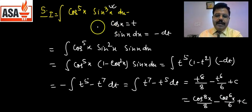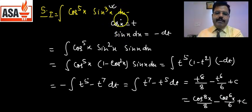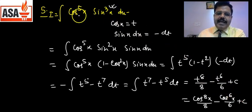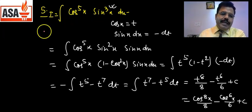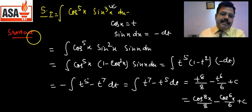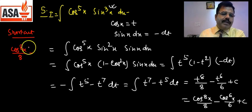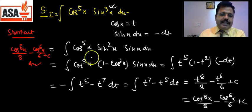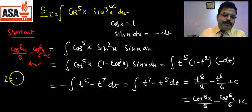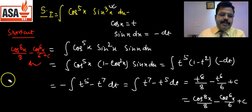Pattern: जब दोनों powers odd हों — एक power cube हो तो answer 2 terms में आएगा, power 5 हो तो 3 terms में। Shortcut: दोनों को जोड़ दो, फिर 2 का difference। जैसे cos⁵x·sin³x में 5 + 3 = 8, फिर 2 कम: cos⁸x/8 − cos⁶x/6 + c।